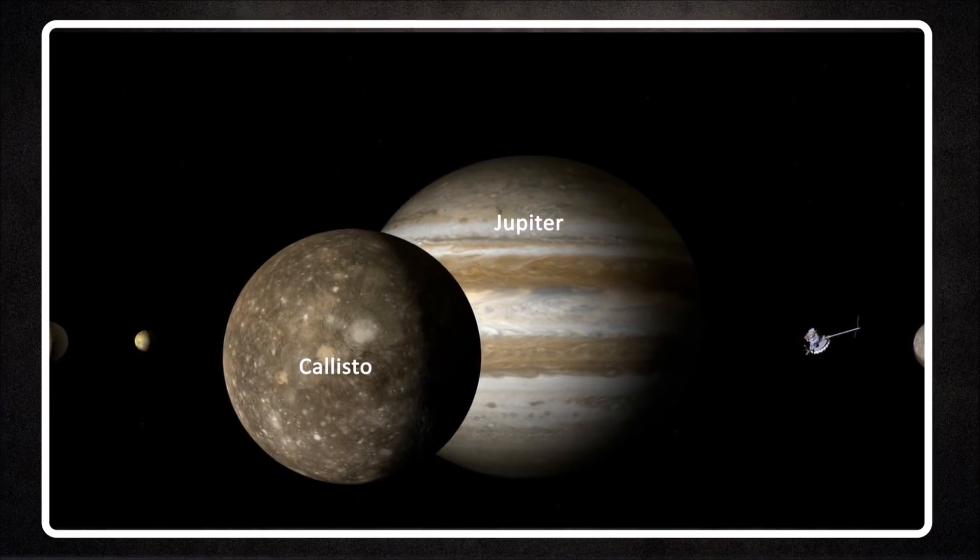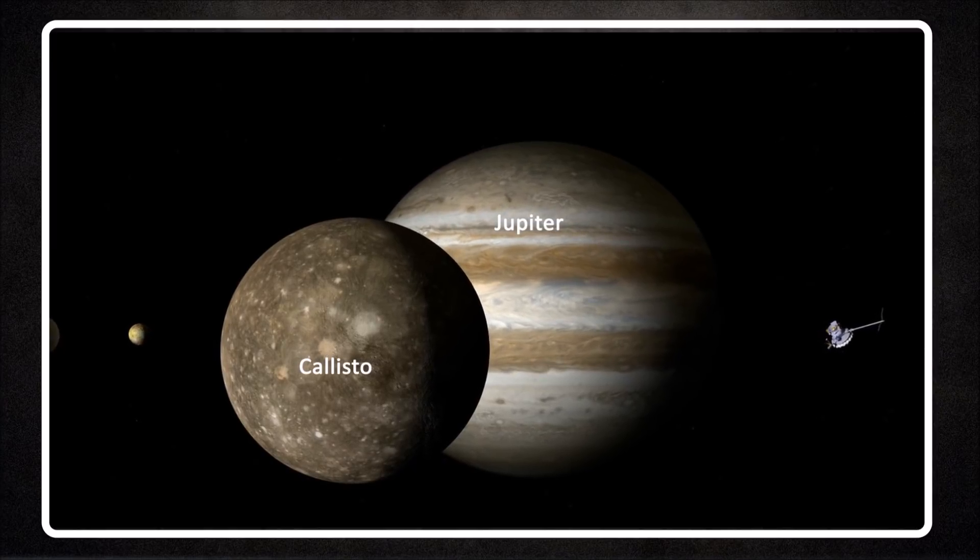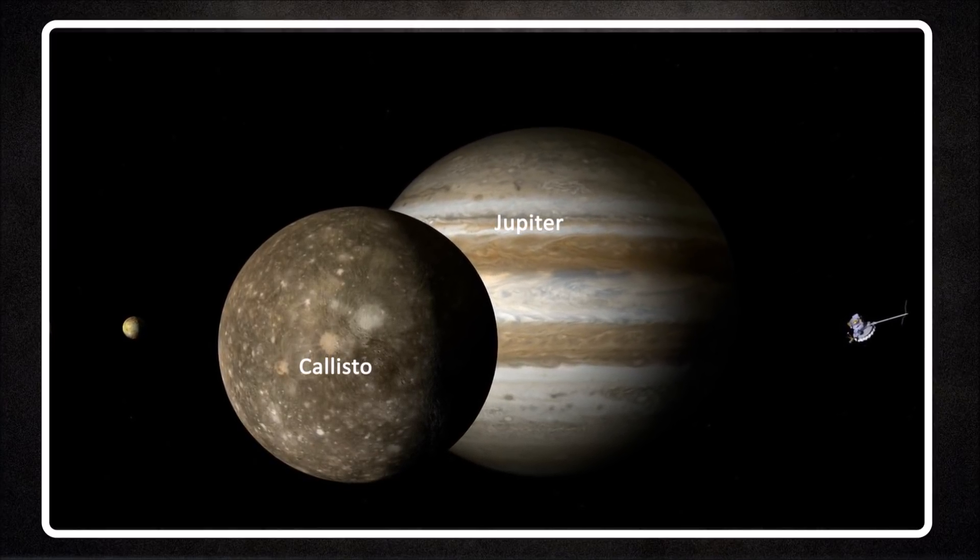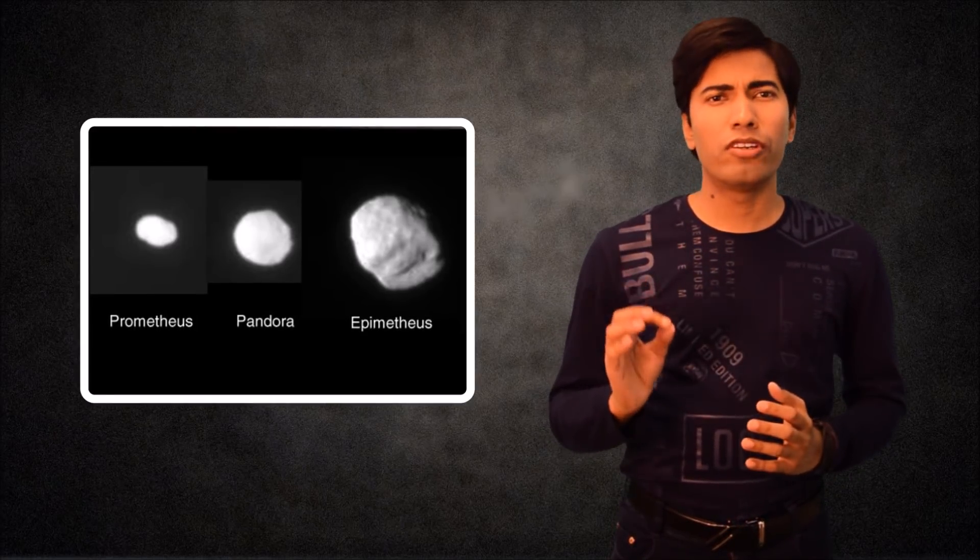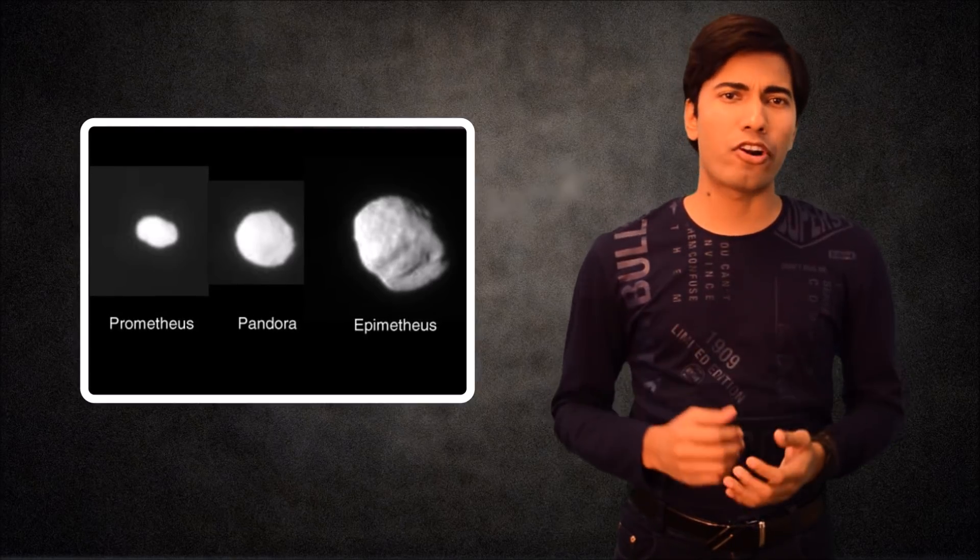Jupiter's Galilean moon Callisto can also appear 1.3 times larger than the sun in Jovian sky. The only moons that seem to be capable of a near-perfect fit like our moon are Saturn's Epimetheus, Prometheus, and Pandora.